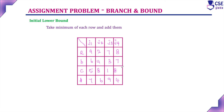The first step is to compute the initial lower bound value. We take the minimum of each row and add them together. First row: 9, 2, 7, 8 — minimum is 2. Second row: 6, 4, 3, 8 — minimum is 3. Third row: 5, 8, 1, 8 — minimum is 1. Fourth row: 7, 6, 9, 4 — minimum is 4.